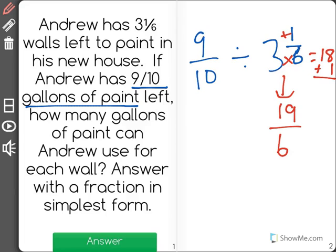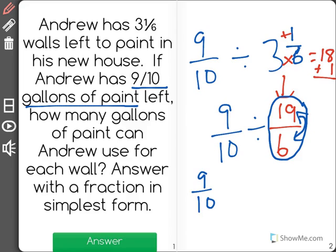And I still have nine-tenths on the other side. So now I have nine-tenths divided by nineteen-sixths, and when we're dividing fractions, what we do is we take our divisor, the number that is being split up into, in this case, nineteen-sixths, and we flip the numerator and denominator. So now what we have is not a division problem, but we are going to multiply by six-nineteenths.